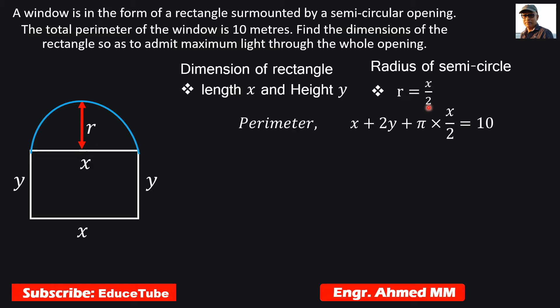Now we need to find the equation for the perimeter. How to get that? It is nothing but adding this x to y and the perimeter of this semicircle, and it is equal to 10.